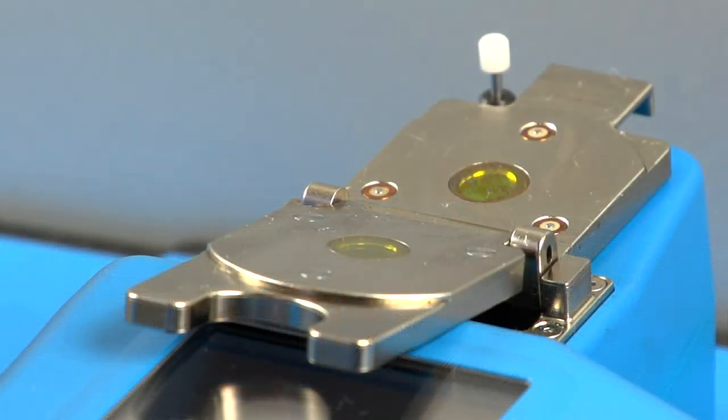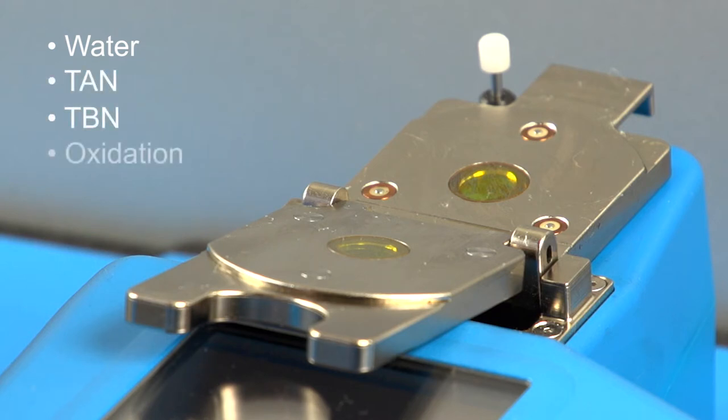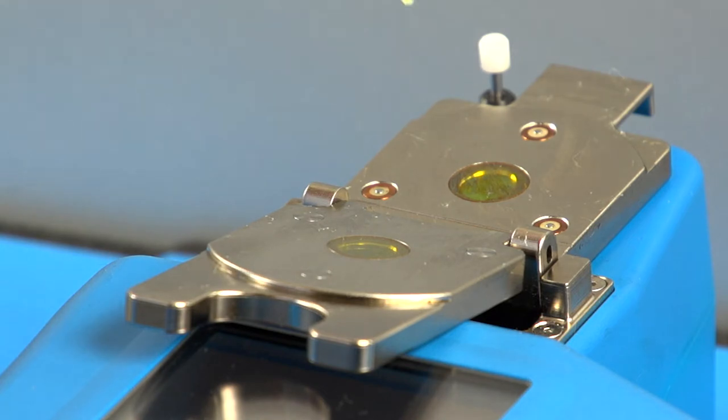The FluidScan infrared spectrometer measures water content and oil chemistry. Parameters such as total acid number, total base number, oxidation, nitration, and sulfation as well as other oil specific properties are measured. A single drop of oil is placed in the flip-top cell. The cell is closed,